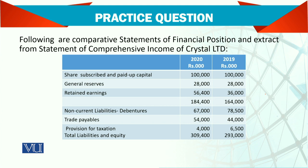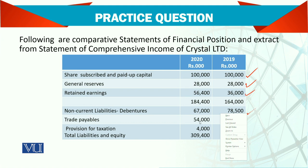Let me just give you share capital — paid up — then we have general reserve, then we have retained earnings. This is part of equity. The total equity comes through, and then we have non-current liabilities: debentures alone. Then we have trade payables, provision for taxes, and total liabilities and equity. Total liabilities and equity is equal to total assets.